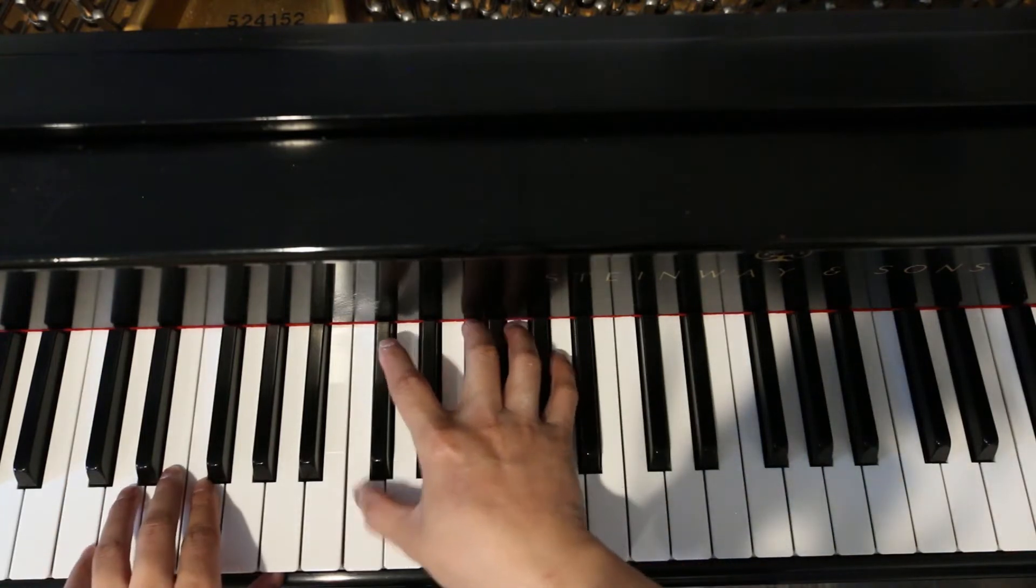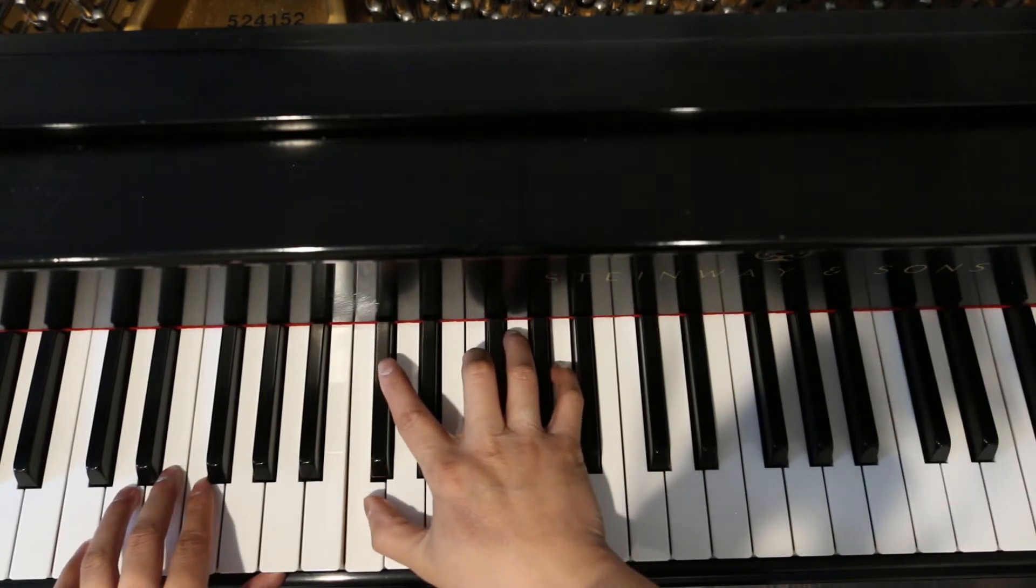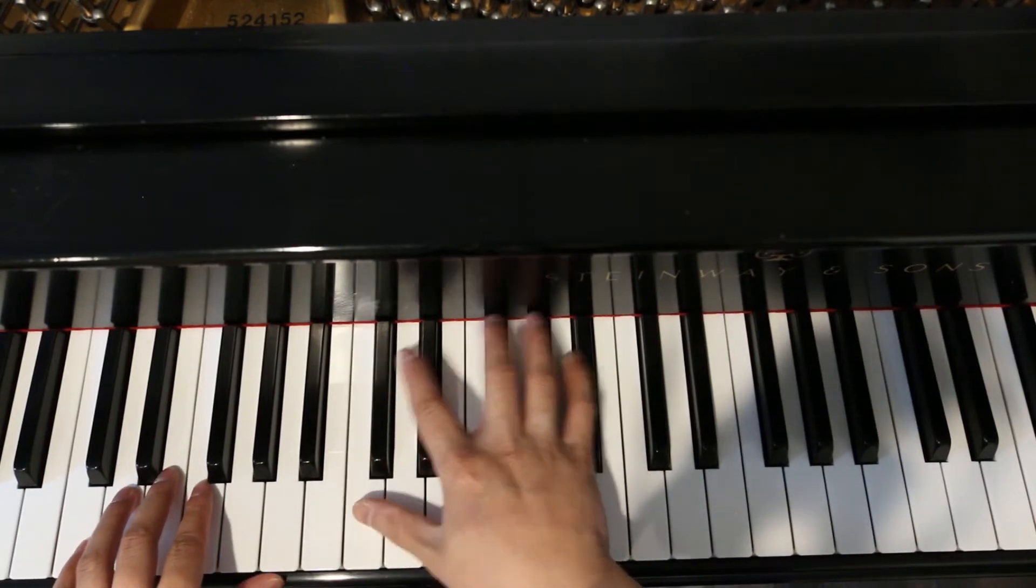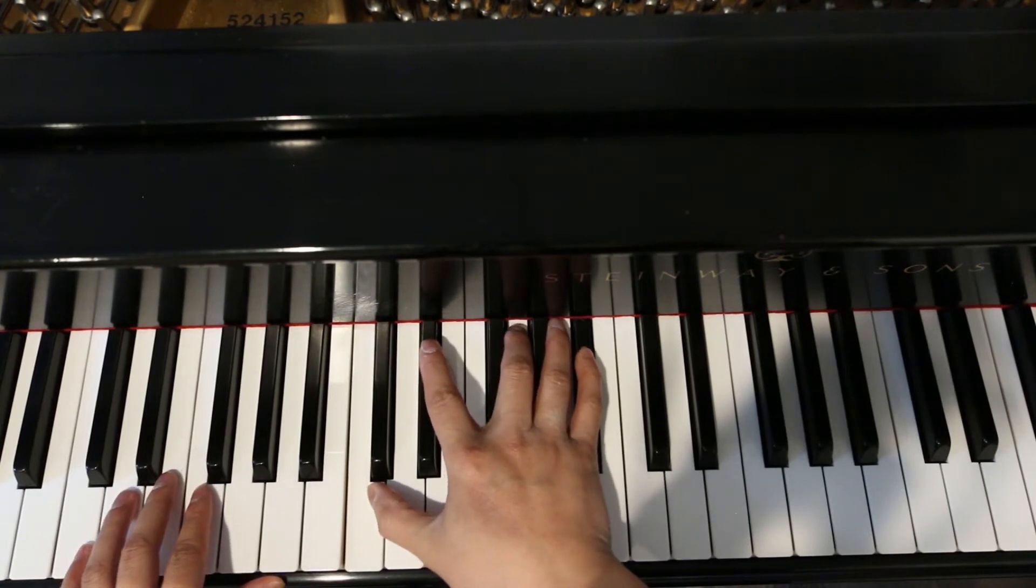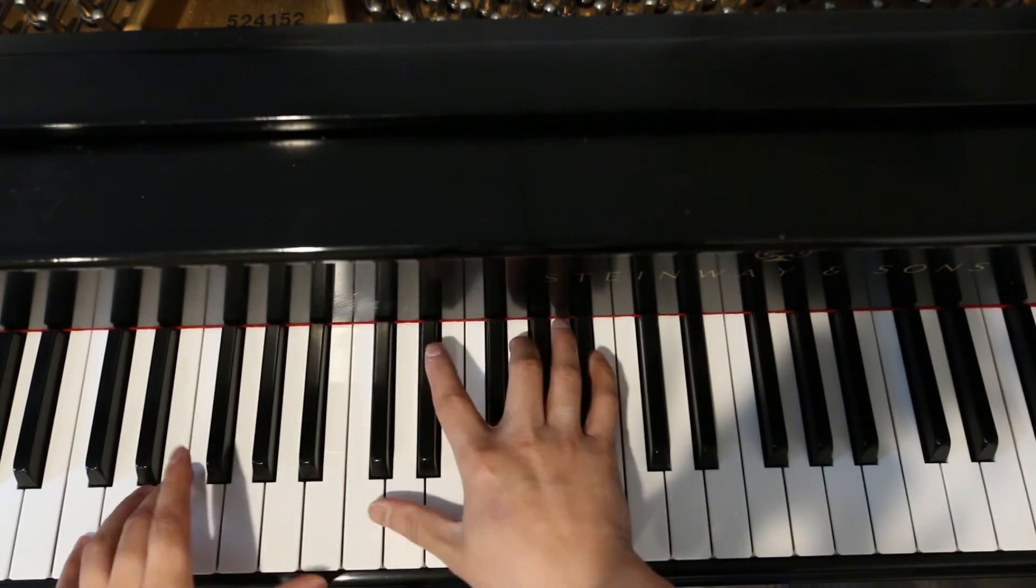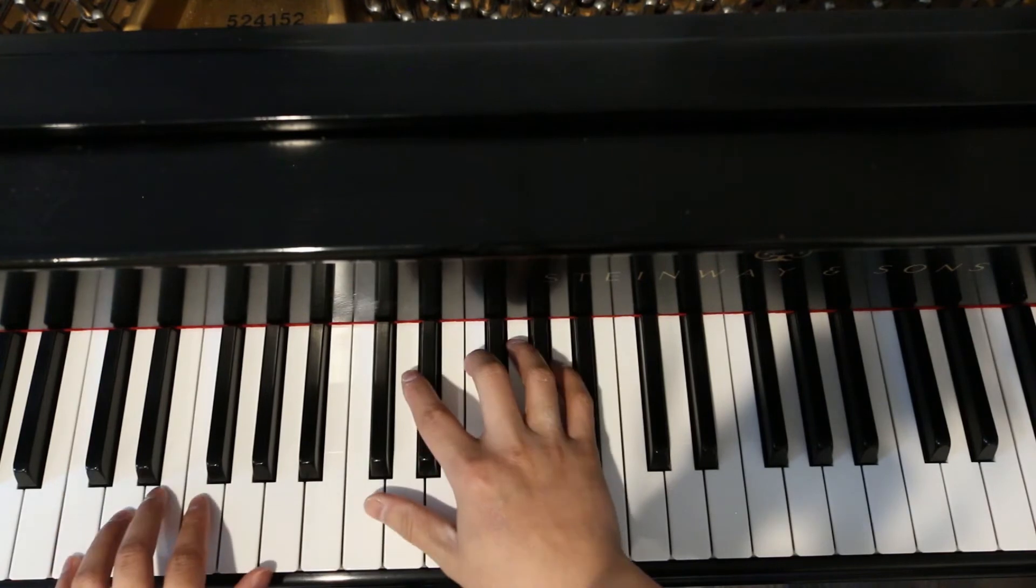So one chord, V chord. Right hand, we'll do C, F, A. So just a second inversion. And then if it's a V7, C, G, B flat, like that. So either one chord or the V7. And that's all you're playing.